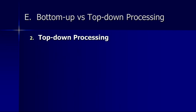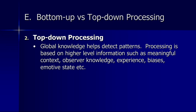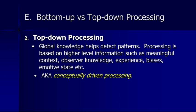That gets us to top-down processing. In top-down processing, global knowledge helps us detect patterns. Processing is based on higher-level information such as meaningful context, observer knowledge, experience, biases, and emotional state — all of these things can drive our perception. Our recent experience can oftentimes really bias our perception. Sometimes we call this conceptually-driven processing because it's concepts that are driving our processing. Our knowledge of language is what helps us see and recognize letters more quickly in the word superiority effect; our mood and recent experiences can bias our perception of bidirectional images.